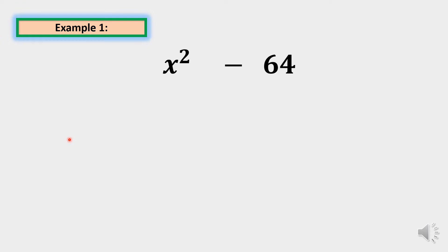Factor x squared minus 64. For the first step, always remember that x squared has a numerical coefficient of 1, and 1 is considered a perfect square number — the square root of 1 is 1. So we just need to factor x squared. What is the factor of x squared?